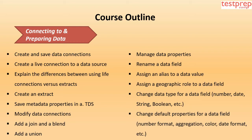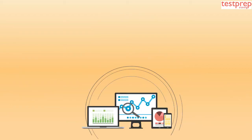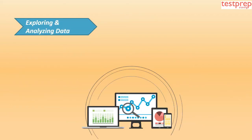Continuing Domain 1: add a union; manage data properties; rename a data field; assign an alias to a data value; assign a geographic role to a data field; change data type for a data field — number, date, string, boolean, etc.; and change default properties for a data field including number format, aggregation, color, and date format.